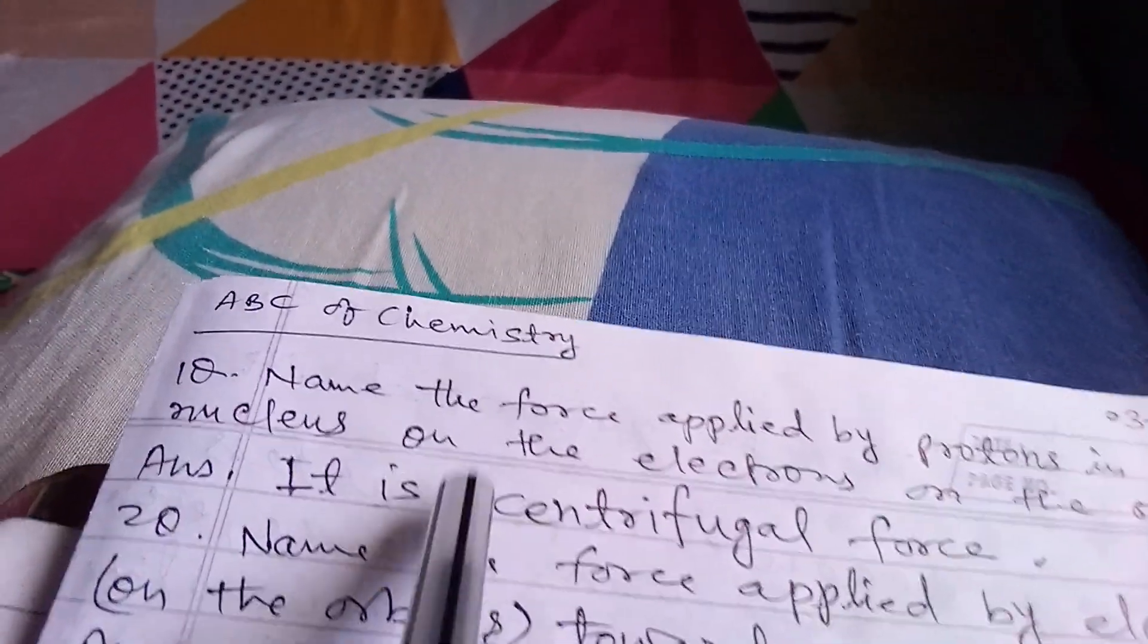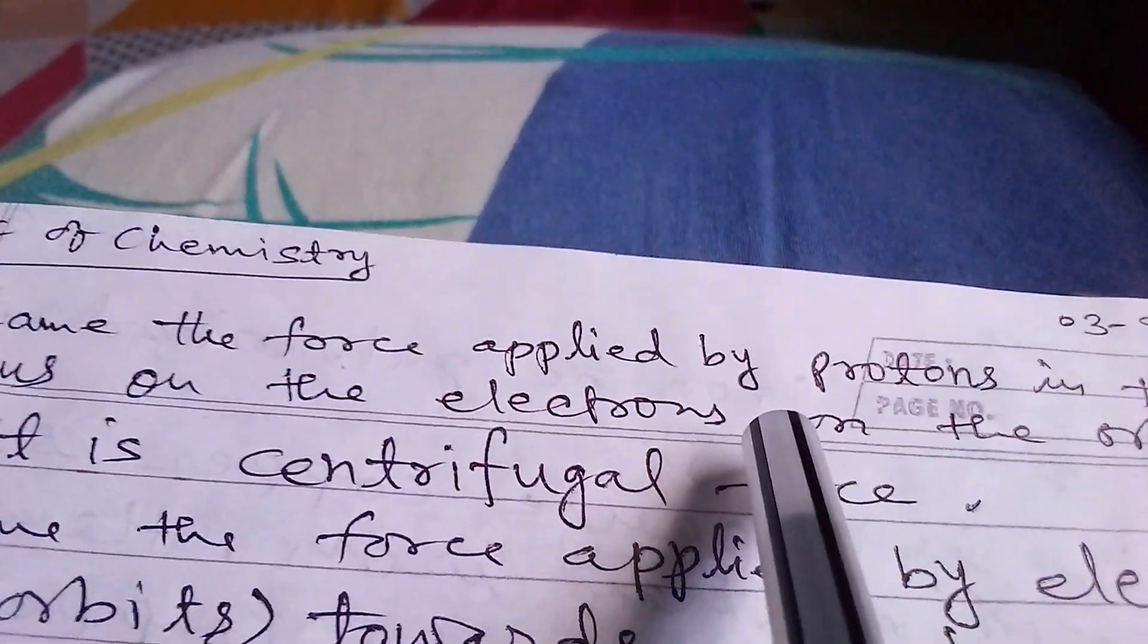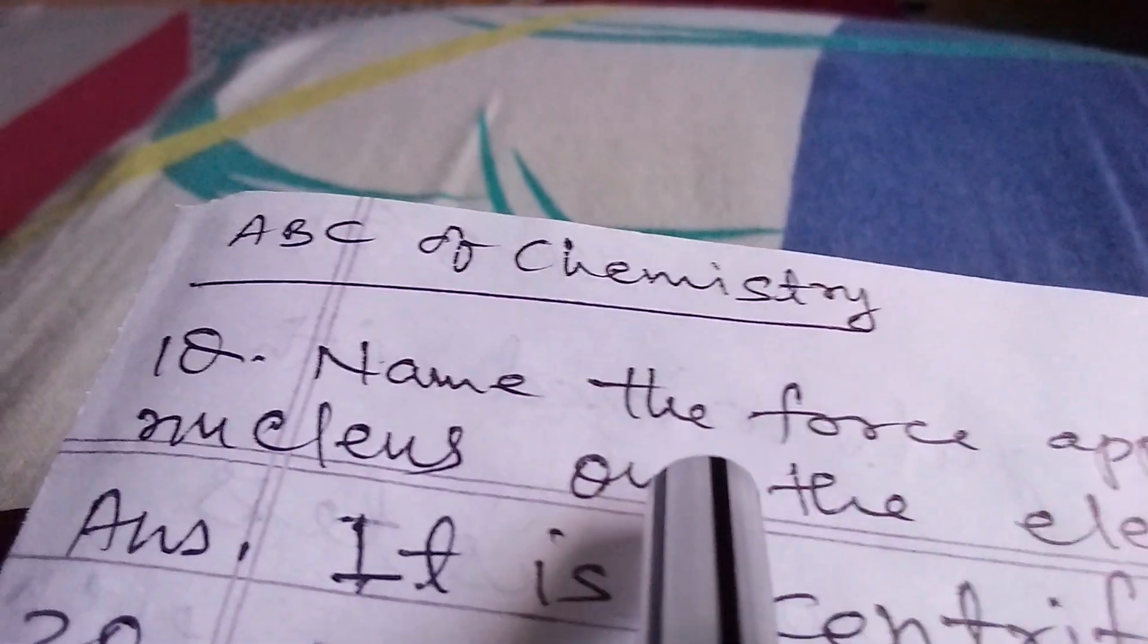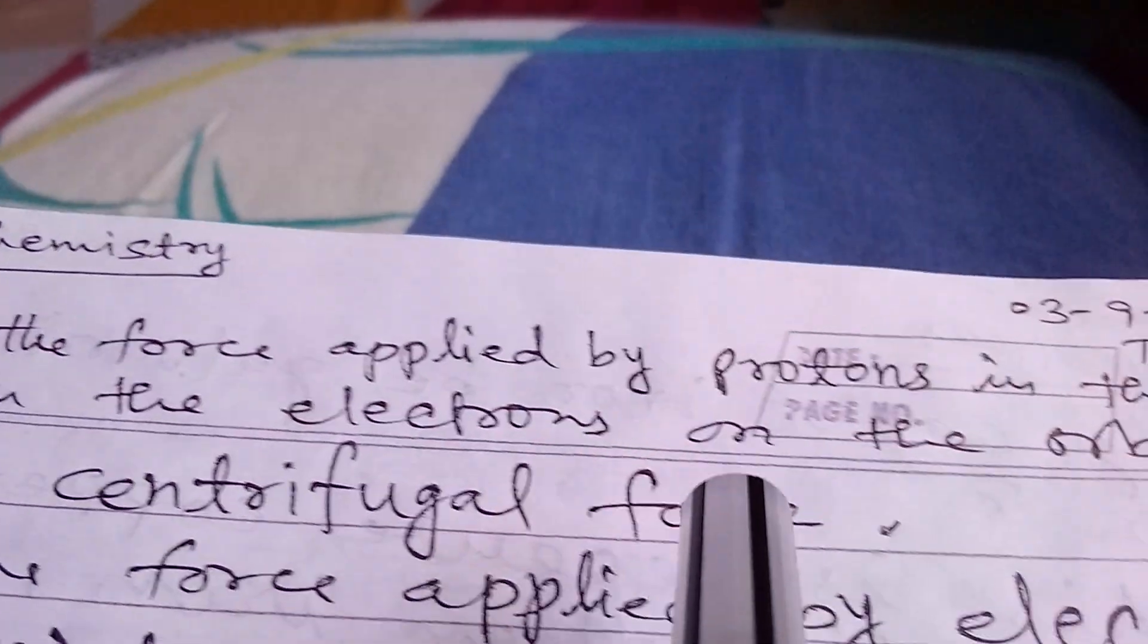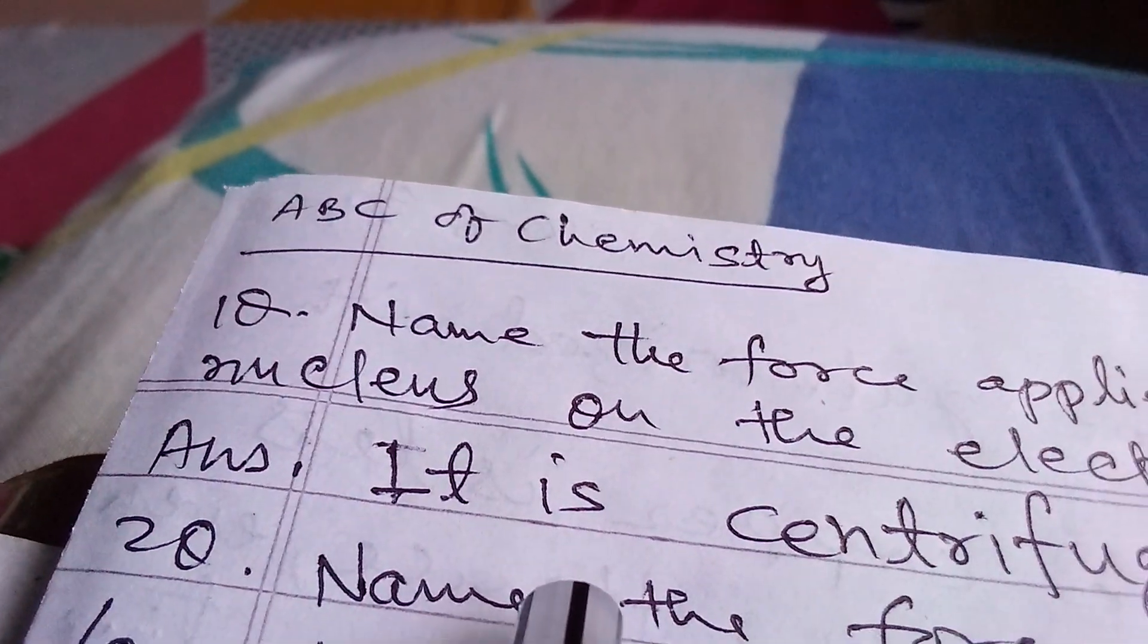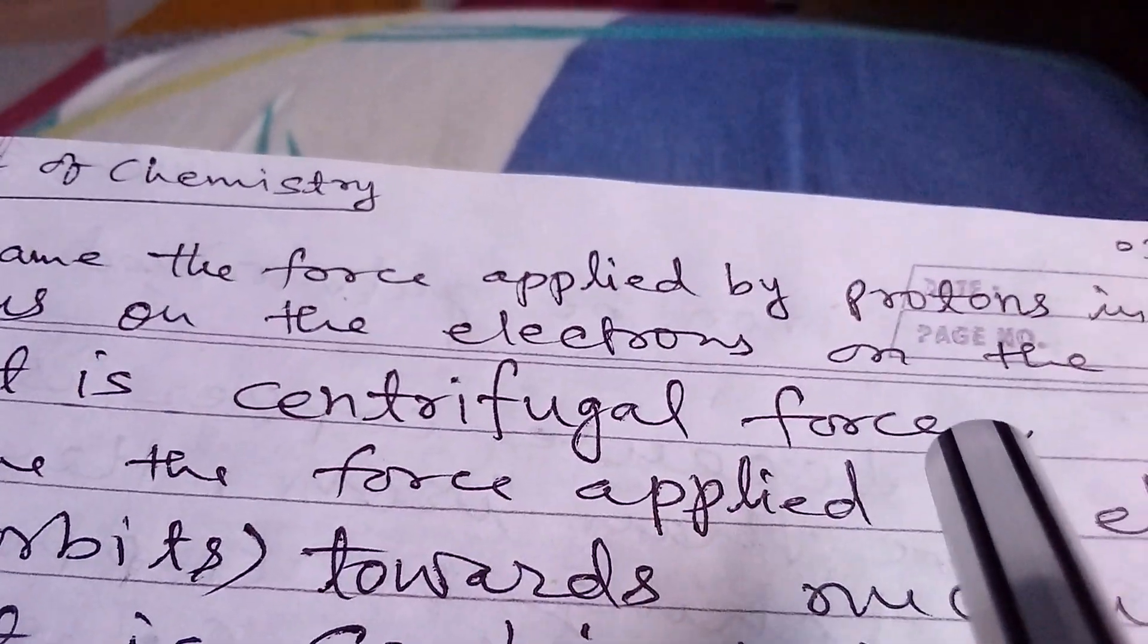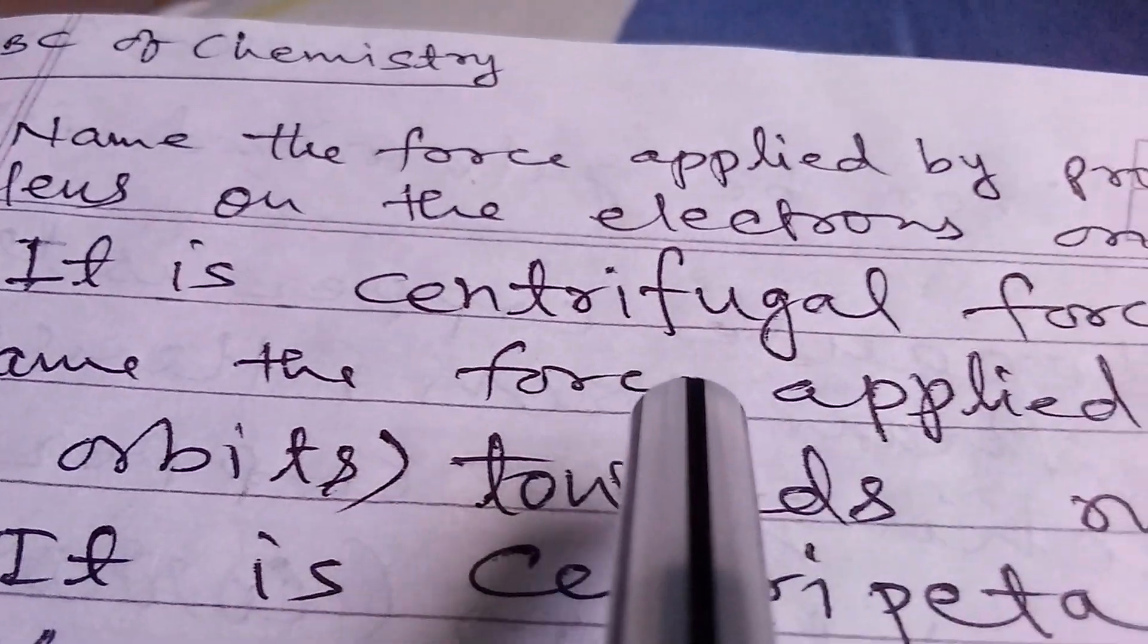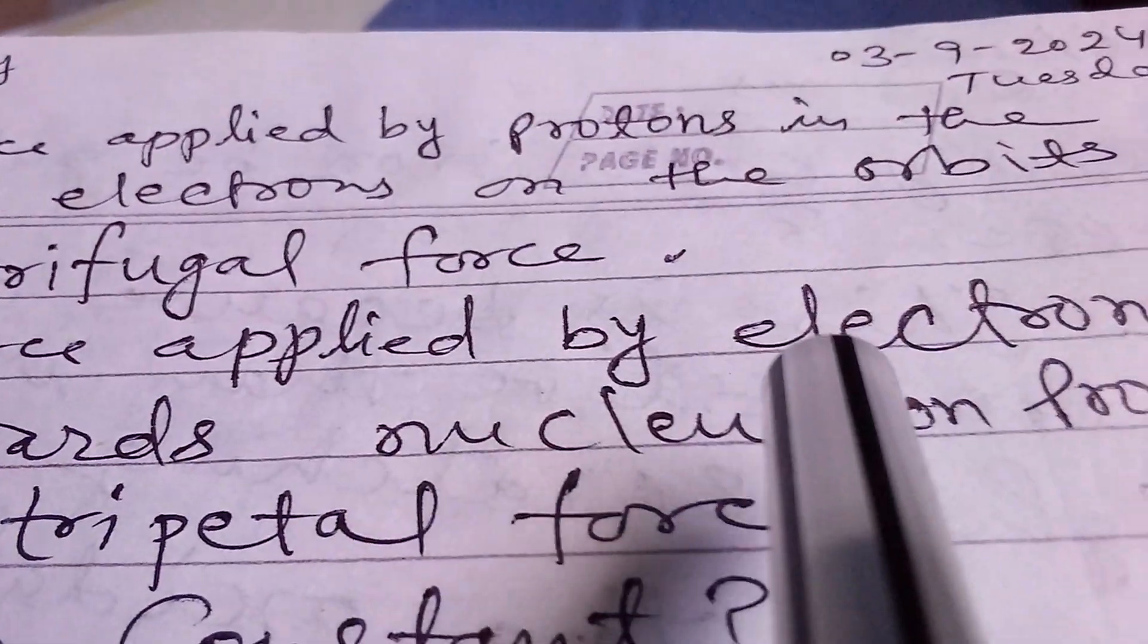The first question is: Name the force applied by protons in the nucleus on the electrons on the orbits. Answer: It is centrifugal force.